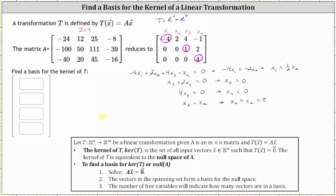So now we know the input vector x in R4 that have an output of the zero vector would be in the form of x one, x two, x three, x four, where x one would be one half t, x two would be t, and x three and x four would both be zero.